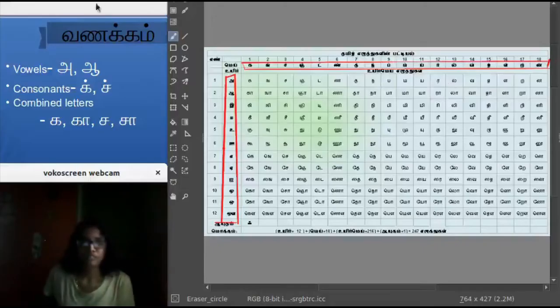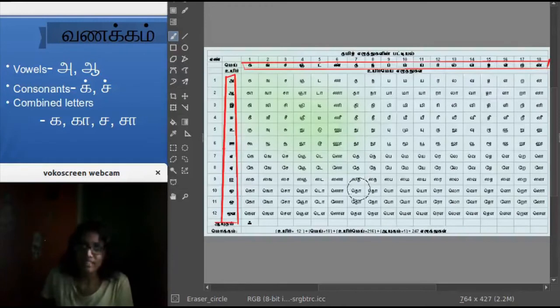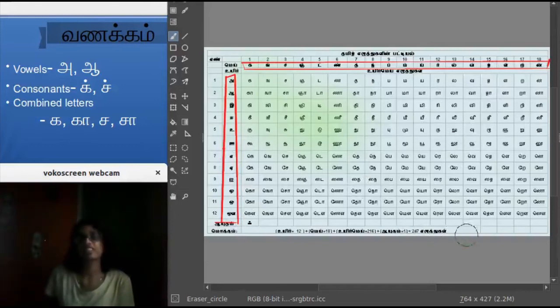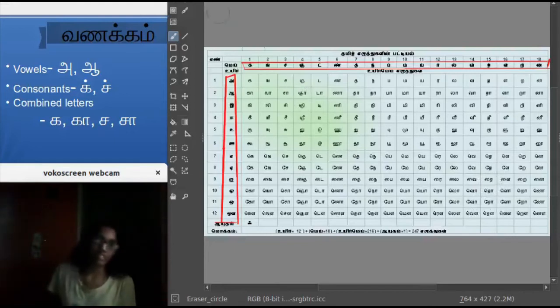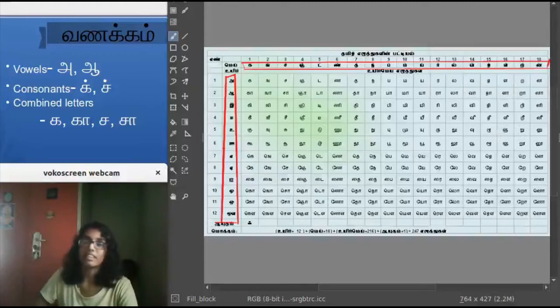Coming back to the structure. We have 12 vowels, 18 consonants and 216 combined letters. Also we have a single special character. So in total we have 247 letters in Tamil language. So 247 is a huge number, isn't it? But don't panic. Once you get to know the tricks, numbers don't matter. Let us begin with the real reading and writing concept.